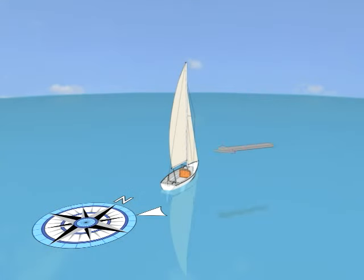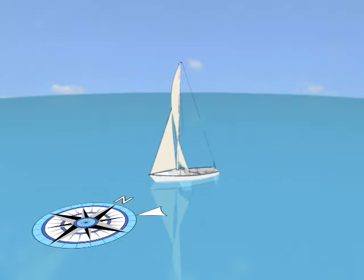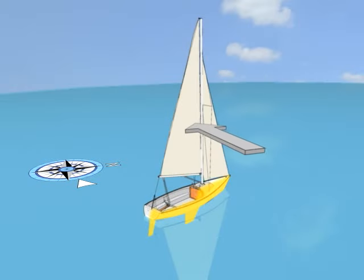Whether you're sailing upwind, across the wind, or downwind, the wind will be blowing over one side of the boat or the other. If the wind is blowing over the right or starboard side, you're sailing on starboard tack.